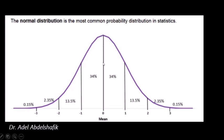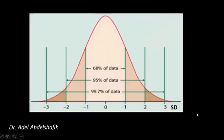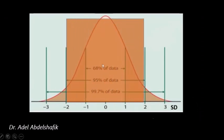The normal distribution is the most common probability distribution in statistics. If this is the mean, one standard deviation above or below contains 34% of the people. Between one and two standard deviations, 13.5% on each side, and between two and three standard deviations, 2.35%. From two standard deviations below to two above the mean, we include 95% of the data — the most important figure in statistics.